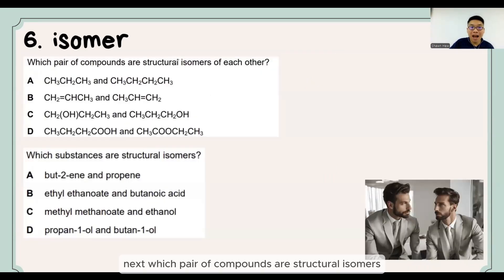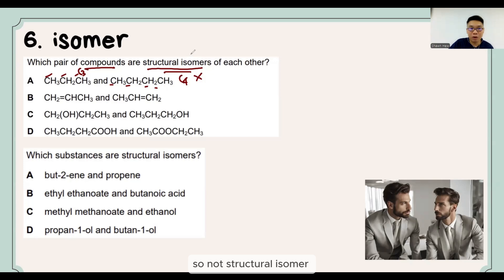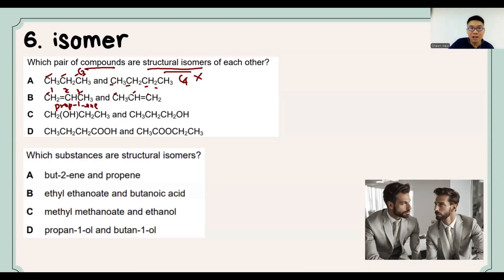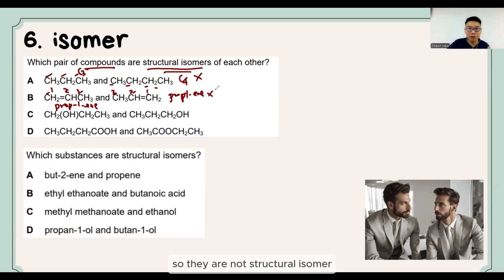Next: which pair of compounds are structural isomers? Looking at option A — here we have C3 and here we have C4, so obviously they don't have the same molecular formula — not structural isomers. For option B, both structures are C3 and both turn out to be prop-1-ene, so they not only have the same molecular formula but also the same structural formula — not structural isomers.